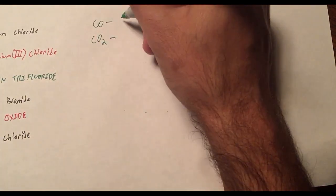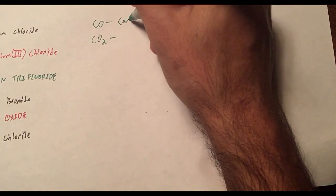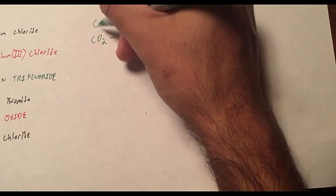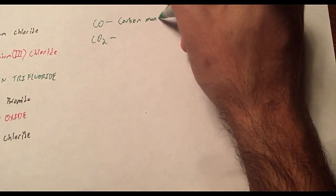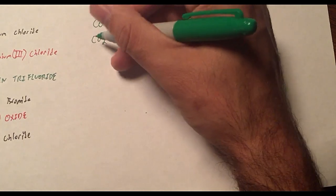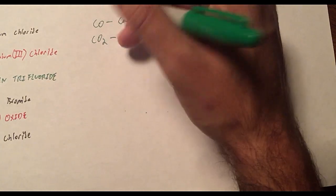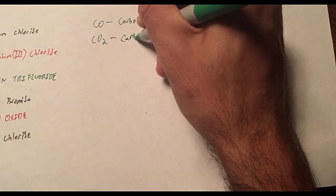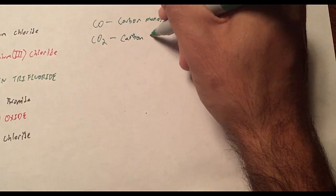So carbon, I put first. Then I've got one oxygen, carbon monoxide. We've already done this. Then I have carbon with two oxygen. Same thing. Carbon. This is dioxide.